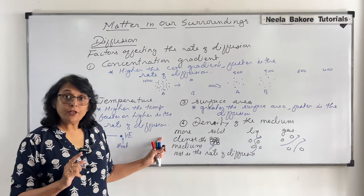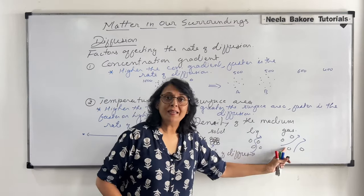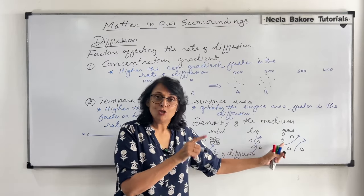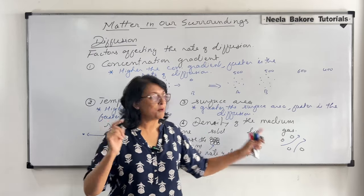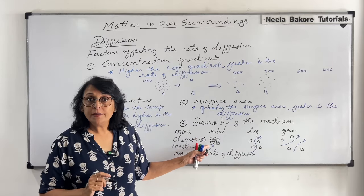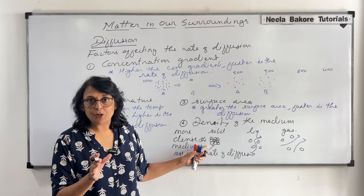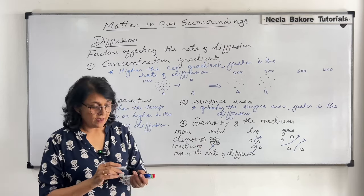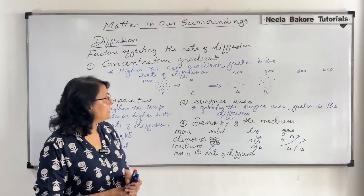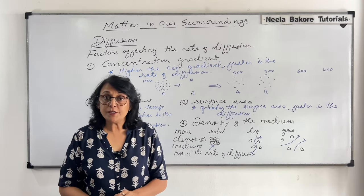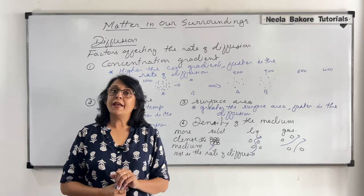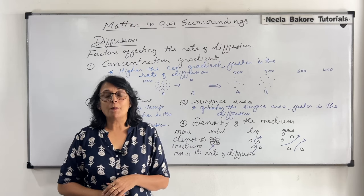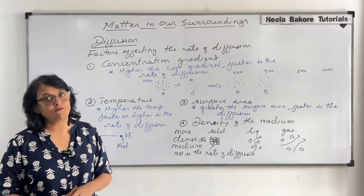Rate of diffusion is maximum in gases because the density is least — least density, maximum diffusion. In solid, diffusion is almost negligible because maximum density means least rate of diffusion. So these are some important factors which would affect the rate of diffusion. In the next part, we will talk about the states of matter.